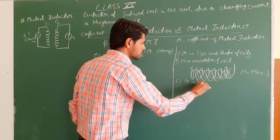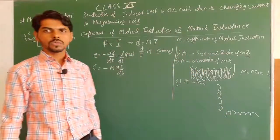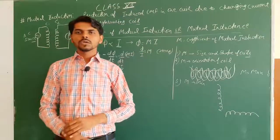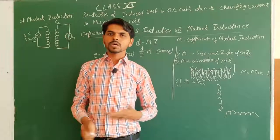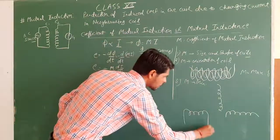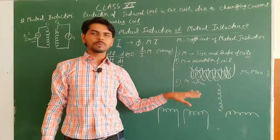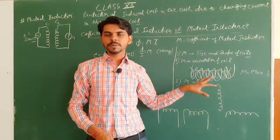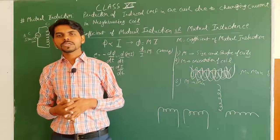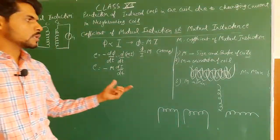M will be minimum when both coils are perpendicular to each other, because in that case minimum magnetic flux is linked — fewer magnetic field lines pass through. So the coefficient of mutual induction is also minimum. If the coils are placed in any other orientation, M will be between its maximum and minimum values. This is the dependence on the orientation of the coils.